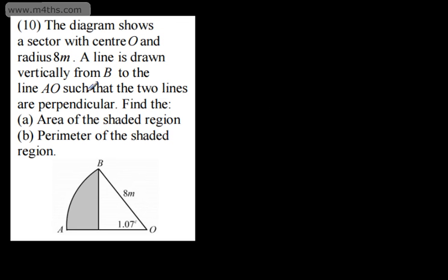Let's move on. This is question number 10. We're told the diagram shows a sector with centre O and radius 8 metres. A line is drawn vertically from B to the line AO such that the two lines are perpendicular. We're asked to find the area of the shaded region and the perimeter of the shaded region.